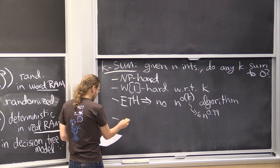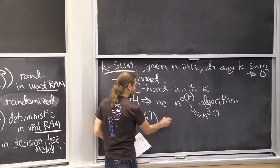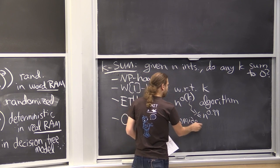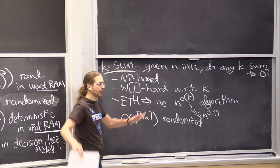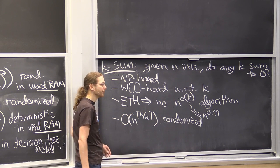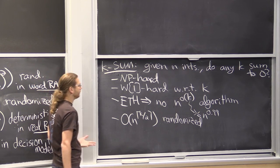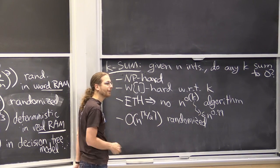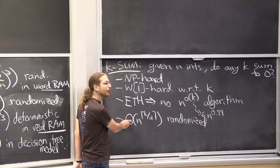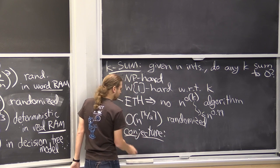On the upper bound side, what people believe is the right answer is n^(⌈k/2⌉), at least randomized — with a possible log factor for deterministic. You achieve this by computing all ⌈k/2⌉-wise sums twice and looking for collisions in a hash table. The ceiling is what makes 3-SUM quadratic. 4-SUM is just as easy as 3-SUM — both can be solved in quadratic time. But for 5-SUM, the conjecture is that it requires n³ time.